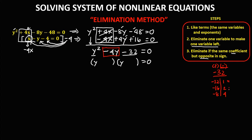Add each factor pair to find the middle term: negative 32 plus 1 is negative 31; negative 16 plus 2 is negative 14; negative 8 plus 4 is negative 4. Since the middle term is negative 4, the correct factors of negative 32 are negative 8 and positive 4.